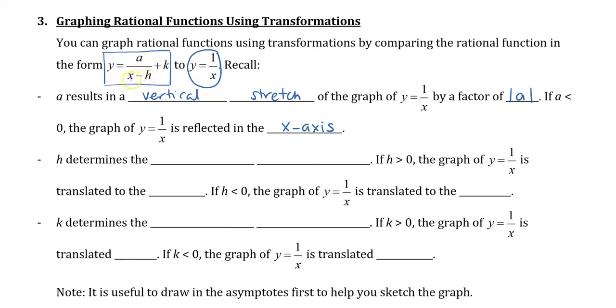The h, notice it's beside the x, determines the horizontal translation. If h is greater than 0, the original graph is translated to the right. If h is less than 0, the graph is translated to the left.